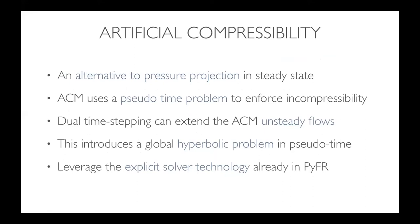The artificial compressibility method is an alternative to pressure projection at steady state. The majority of industrial or commercial CFD solvers use the Poisson equation to solve for the divergence-free velocity field. ACM is an alternative that works quite well in the explicit framework such as PIFR. The way ACM works is it uses a pseudo-time problem to enforce compressibility.